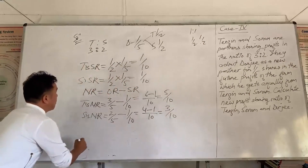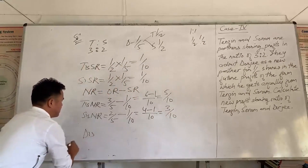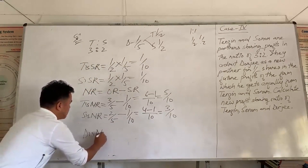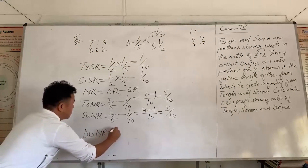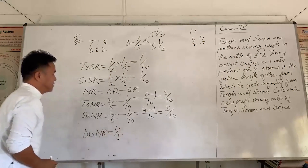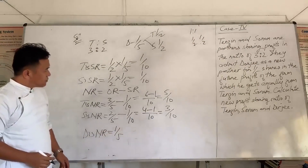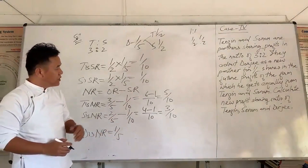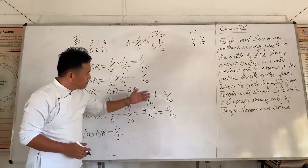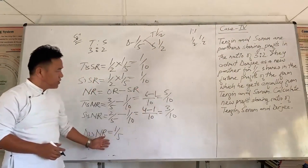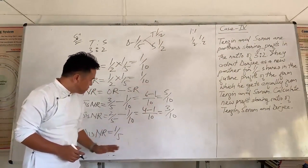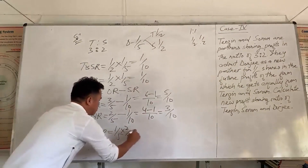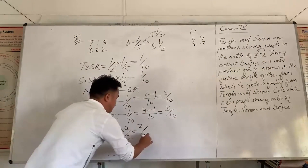Doji's new ratio — since it is already given in the question as 1 by 5, we don't have to find it. We convert 1 by 5 to 2 by 10 to make denominators the same. Therefore the new profit sharing ratio of Tenzin, Sonam and Doji is 5 is to 3 is to 2.